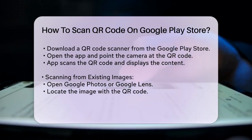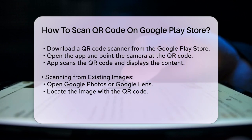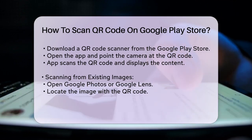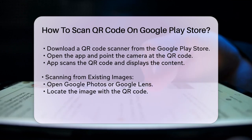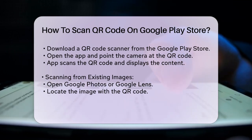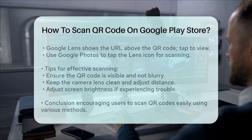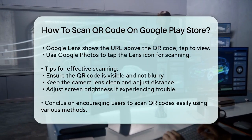Scanning QR codes from existing images. Sometimes you might need to scan a QR code from an image you already have on your device. Open Google Photos or Google Lens and locate the image with the QR code. If using Google Lens, it will show you the URL above the QR code — tap on it to view the content. If using Google Photos, tap on the Lens icon in the bottom pane to scan the QR code.